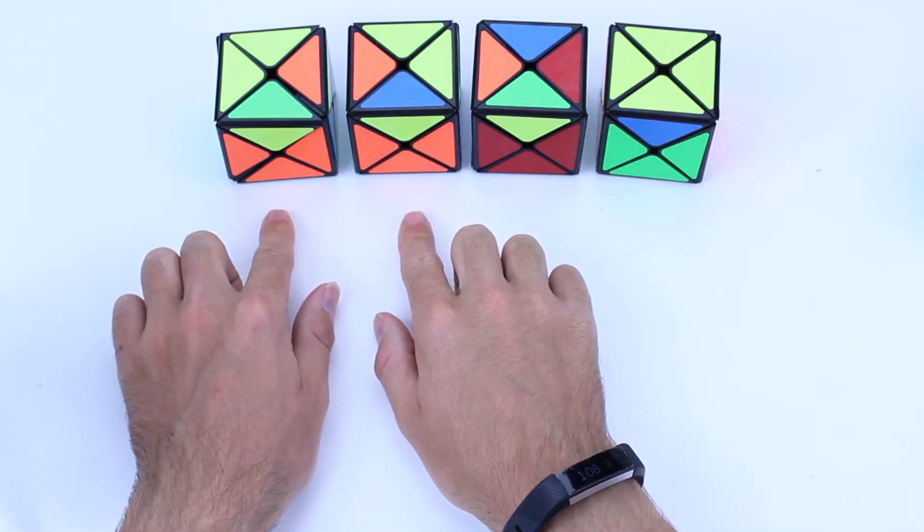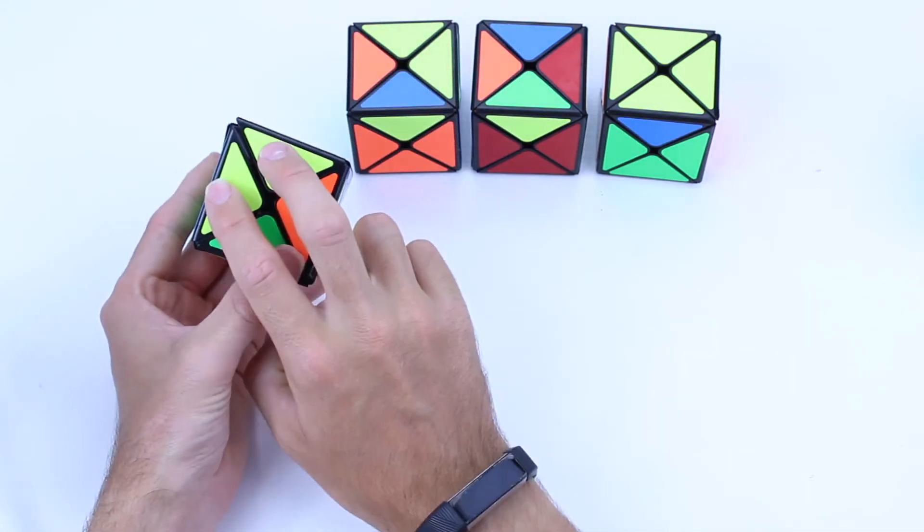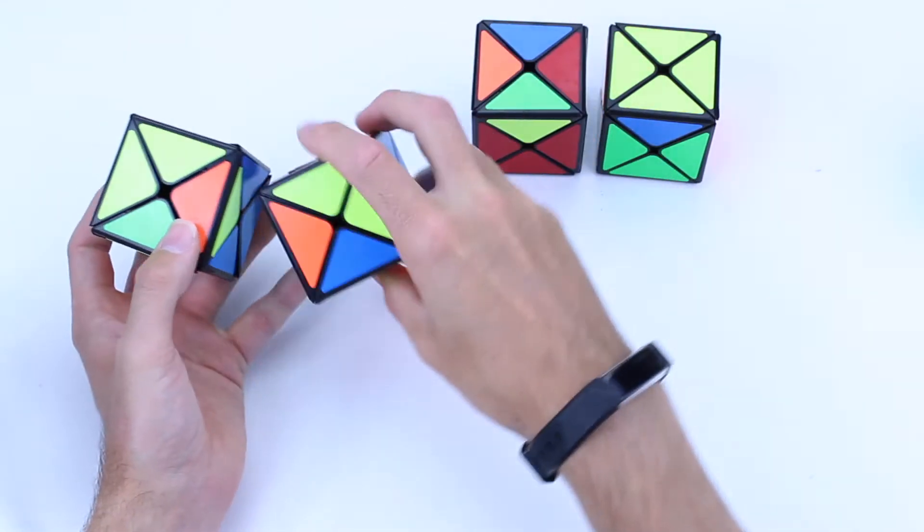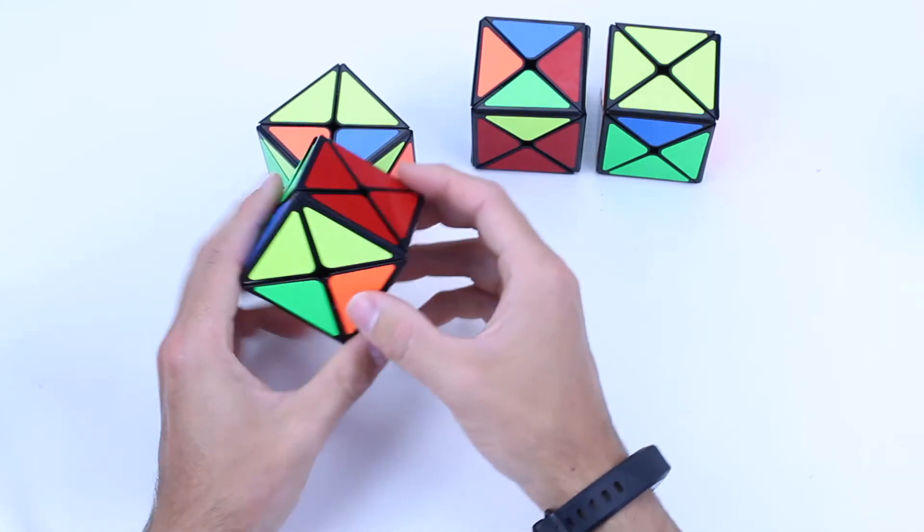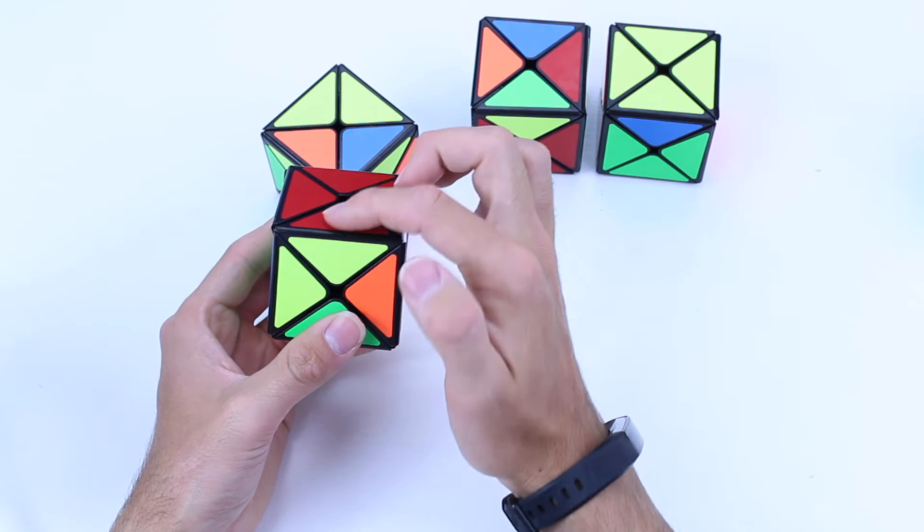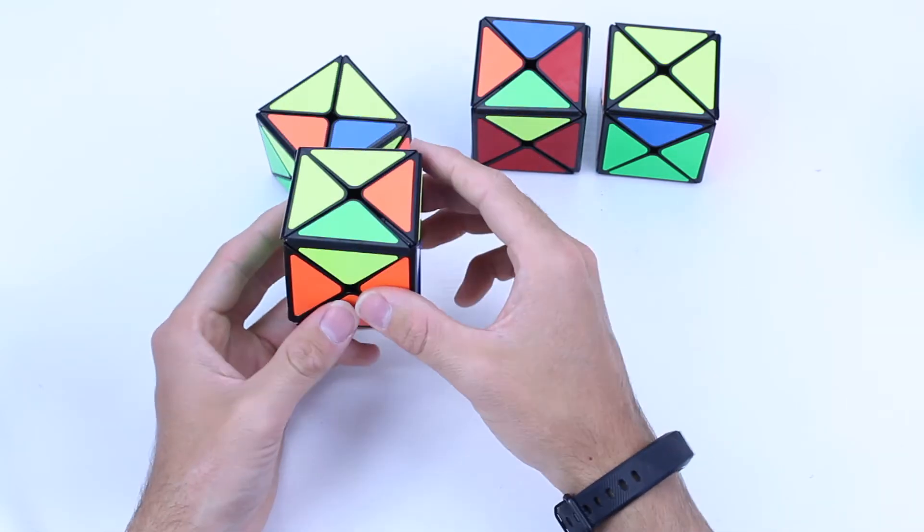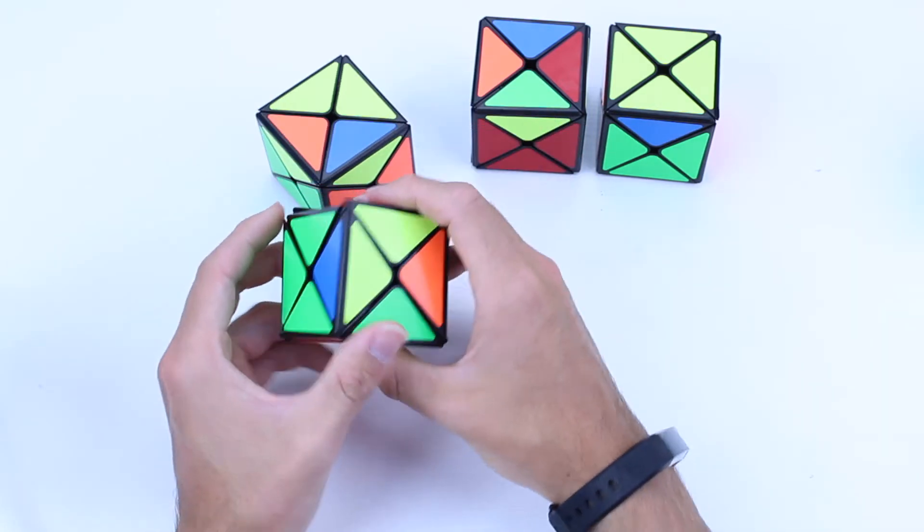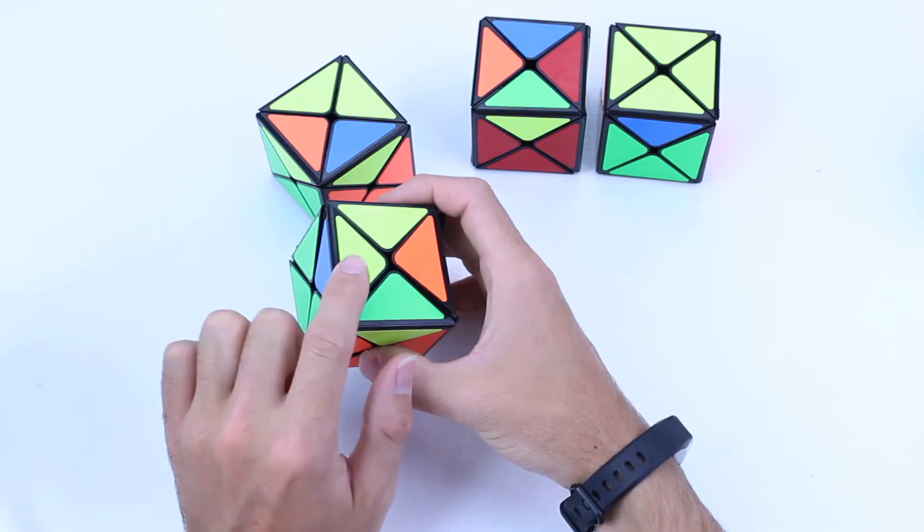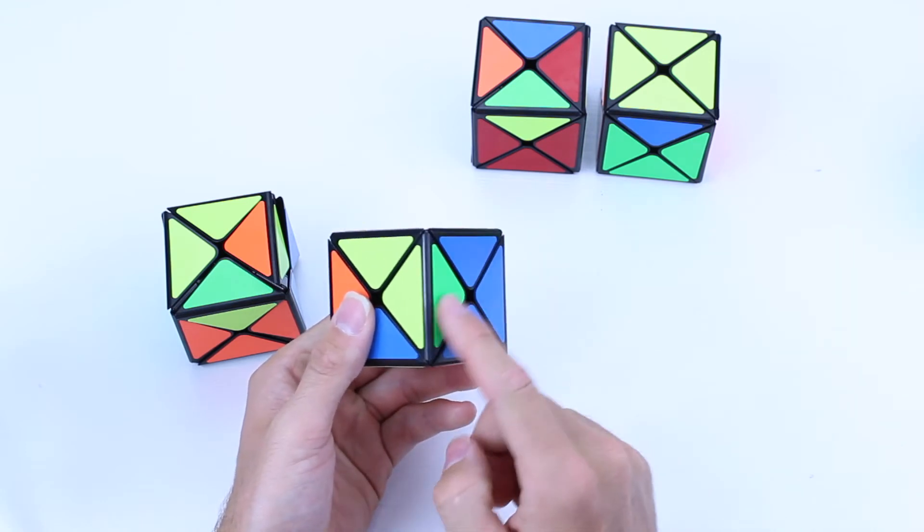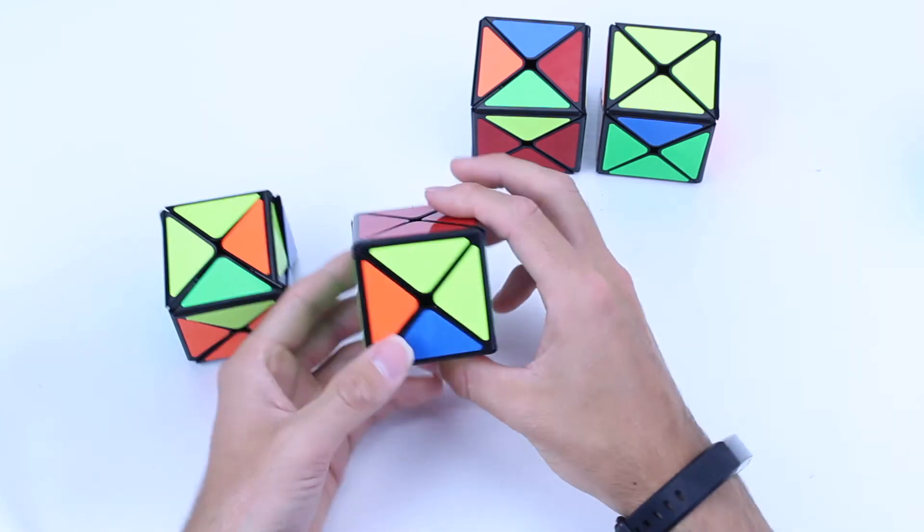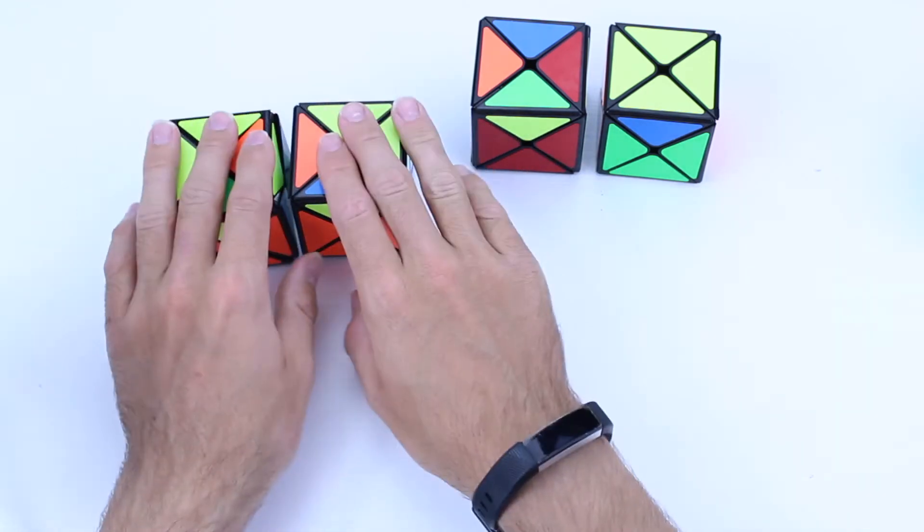Okay, the difference between these two here, the first two - we've got two yellows on the top face. As you can see, they're both almost identical. However, the solved corner or edge, whatever you want to call it, is at the back and the other yellow is on the left. And on this one, the solved corner is at the back and the other yellow is on the right.